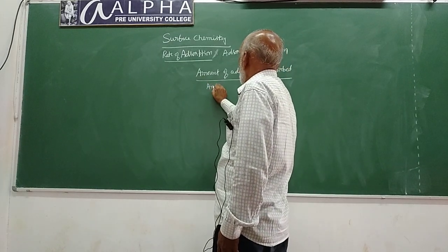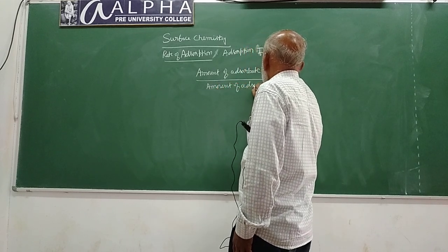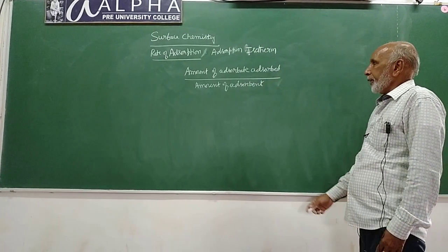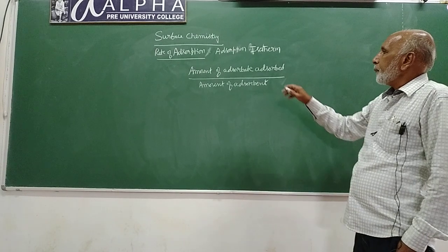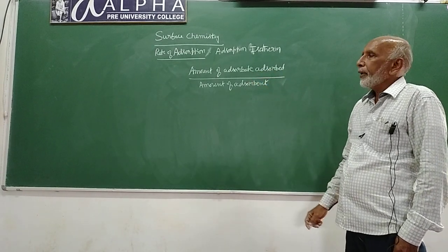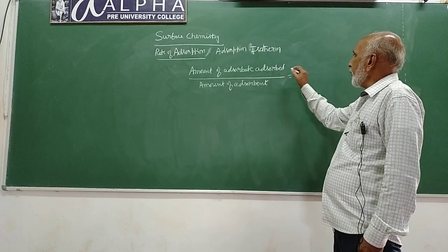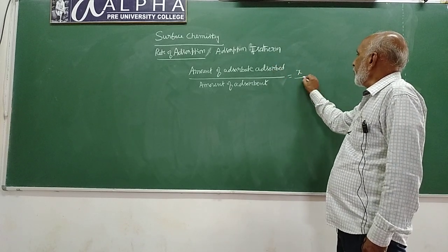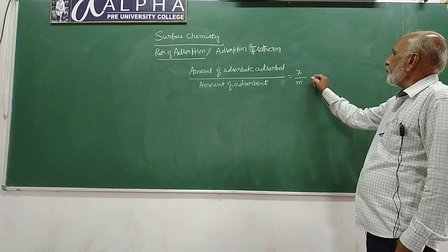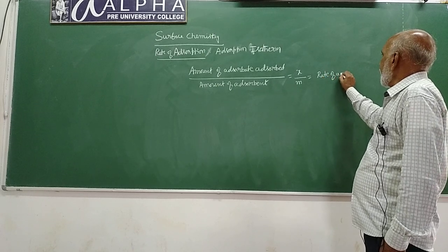The ratio of amount of adsorbate to amount of adsorbent is known as rate of adsorption. If you consider amount of adsorbate as x and m is amount of adsorbent, then x by m is generally known as rate of adsorption.